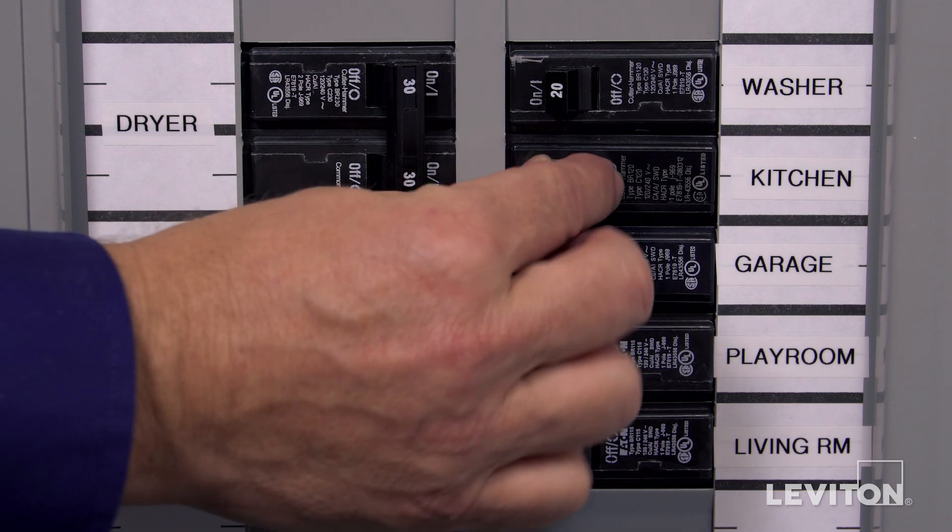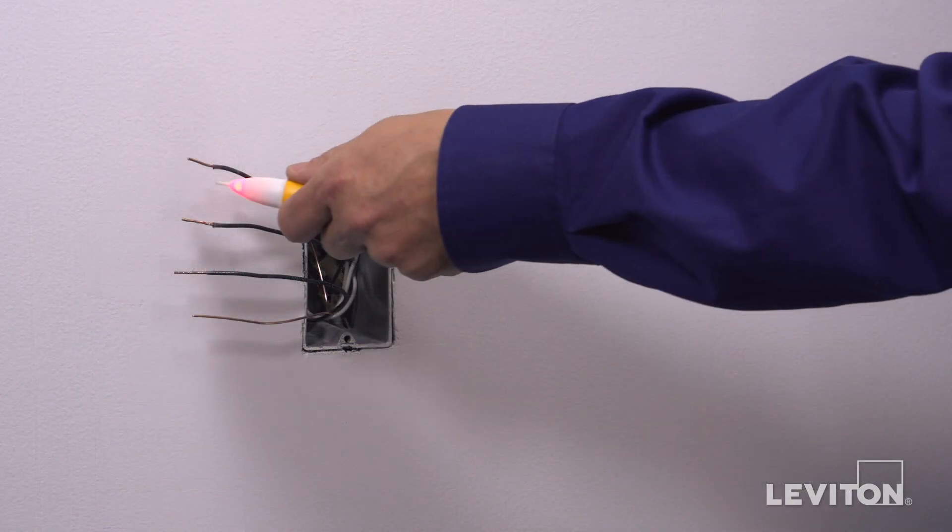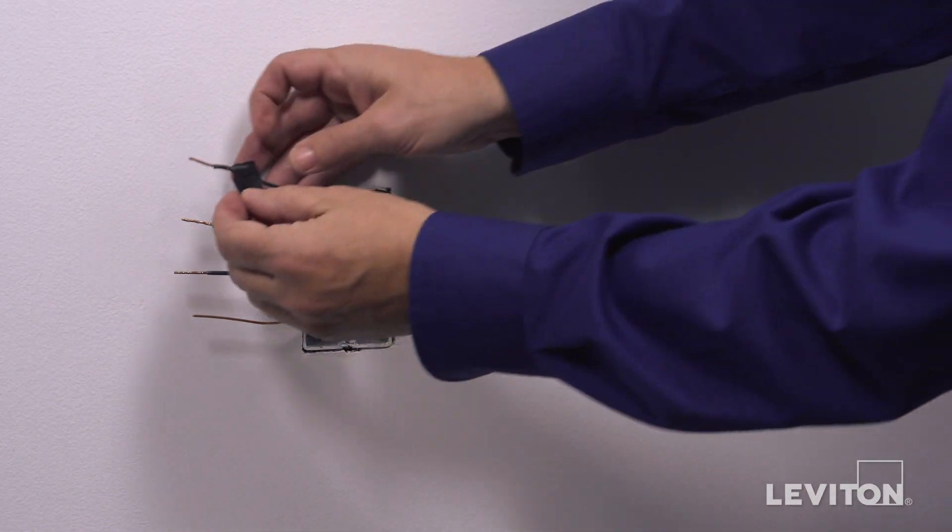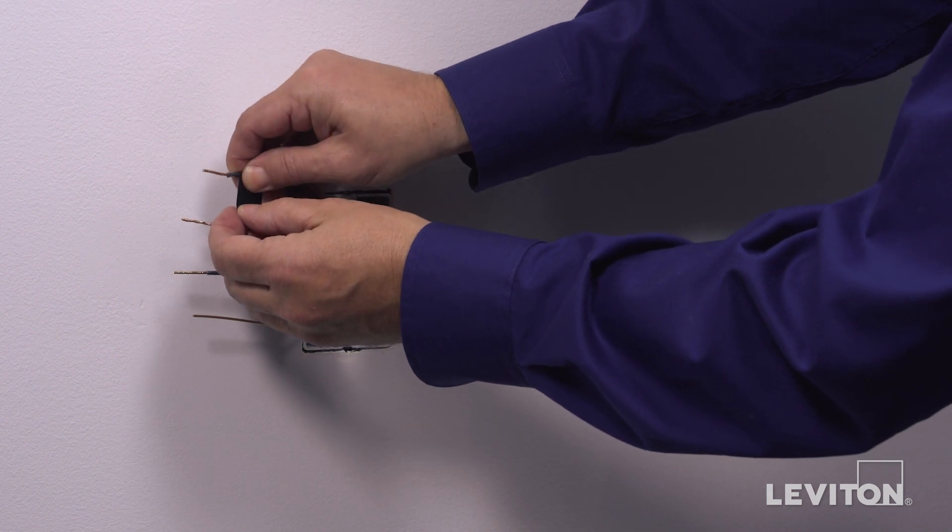Once identified, turn off the circuit breaker to shut power and test to ensure the power is off. Use a small piece of electrical tape to label the hot wire.